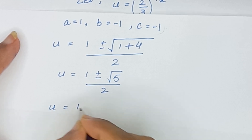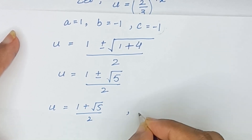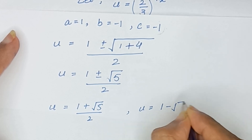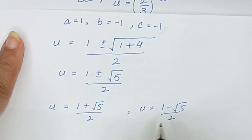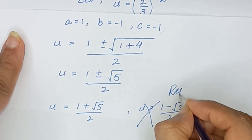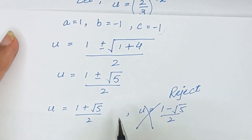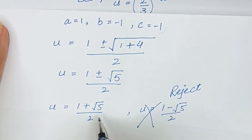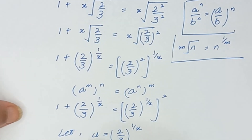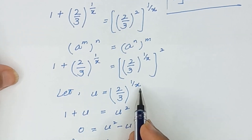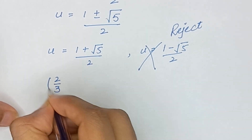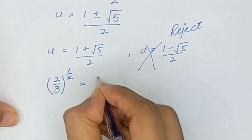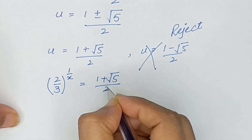The value u equals (1 minus √5) divided by 2 is negative, so we will reject this solution. We continue with u equals (1 plus √5) divided by 2. Recalling that u equals (2/3) to the power (1/x), it will become (2/3) to the power (1/x) equals (1 plus √5) divided by 2.